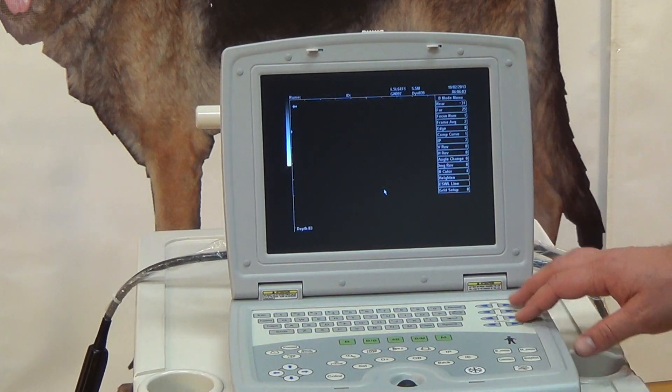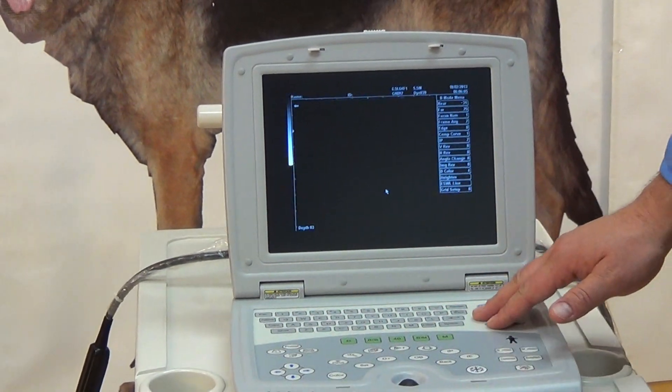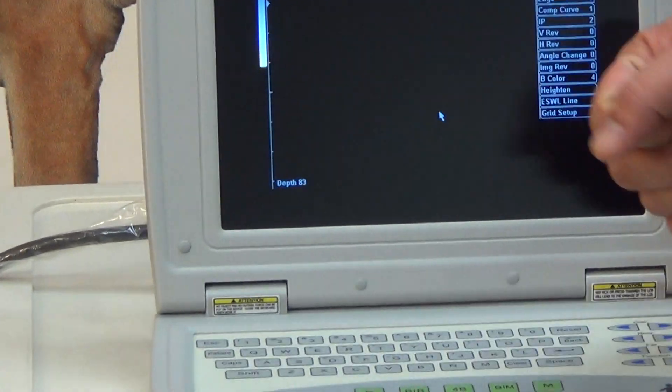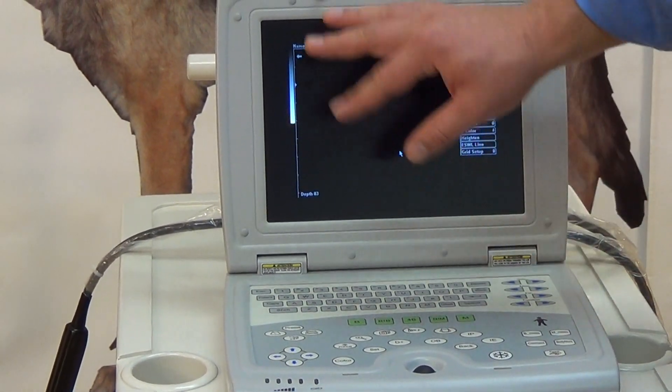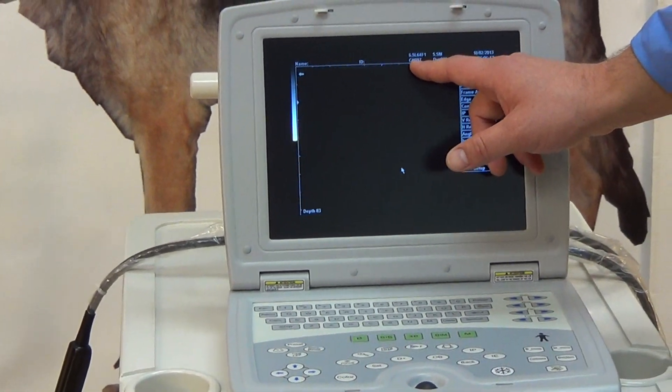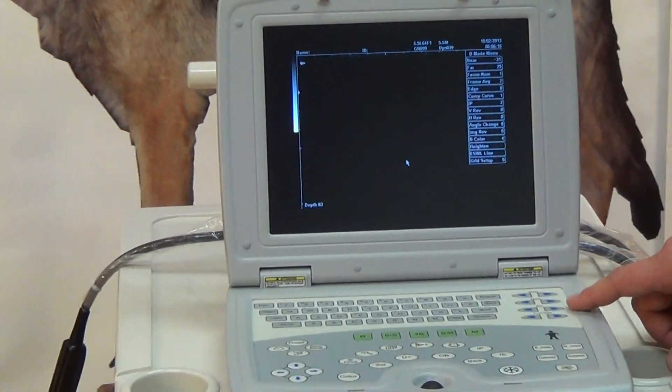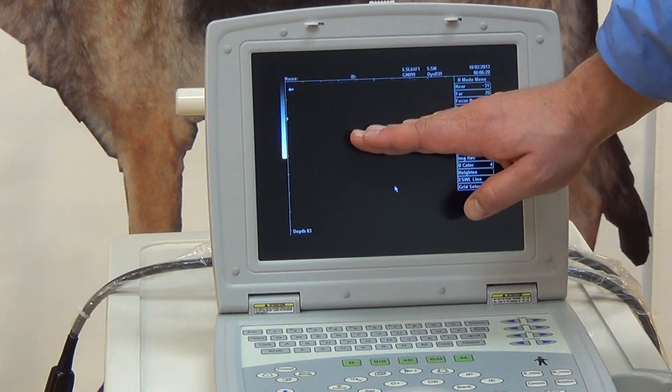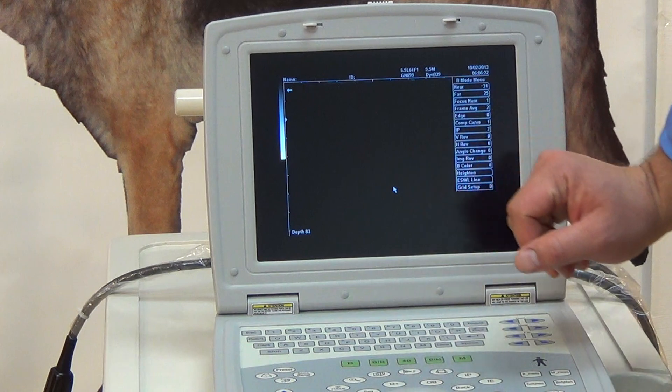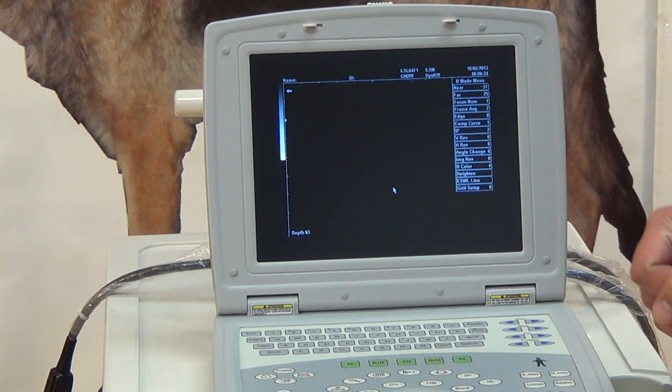Coming up to the right here, obviously the center is the keyboard. That's relatively self-explanatory. You have your settings for gain. So gain is overall brightness, and that's signified here, GN. You can increase the overall or decrease it. There's also a near and a far gain. So you can increase the gain on basically the top half or the bottom half of the screen, depending on what you're looking at.